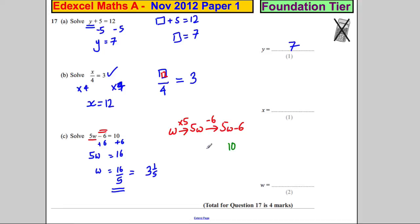So this is the same thing as 10. So to go backwards, you add 6 to get 16, and you divide by 5 to get 16 divided by 5. Either one of these is perfectly fine. 16 divided by 5 would be acceptable.